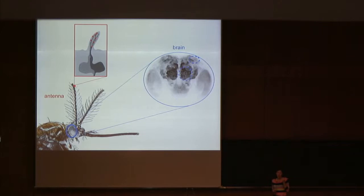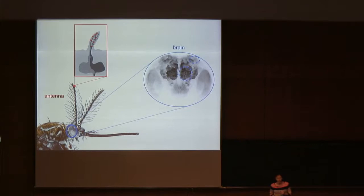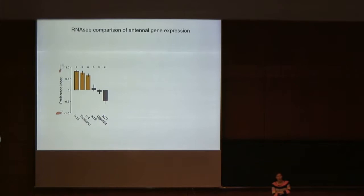Another possibility is that the way these central olfactory circuits integrate information about individual odorants has changed so that the host percept of these mosquitoes now corresponds to the particular blend of odorants found in human odor. The changes may be peripheral, central, or most likely a combination of the two. It's most tractable to look for peripheral changes, so that's where we started, doing an RNA-seq comparison of antennal gene expression in domestic and forest colonies.